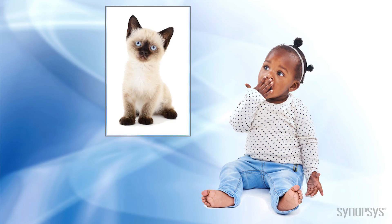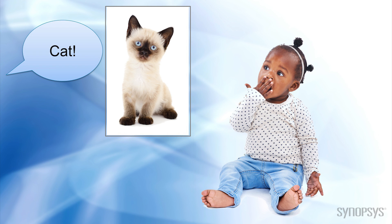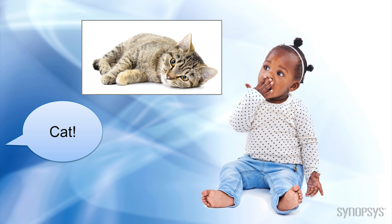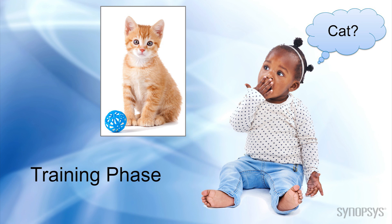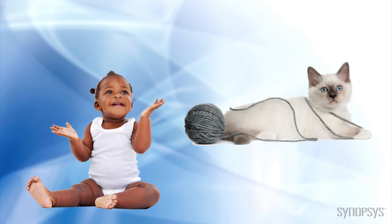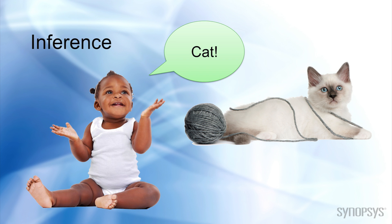To teach a child to recognize a cat, you start by showing her pictures of cats while explaining what's in the picture. As the child's brain processes the images, it begins to form an impression of what a cat is. This is called a training phase. Soon the child can use the knowledge gained to see a cat in the real world and infer that it's a cat.